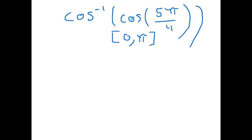If you have a calculator nearby and you divide 5 by 4, you'll get 1.25. So what this means is this value here is 1.25π. Now 1.25π is not within the domain of 0 to π. So what do we do next?